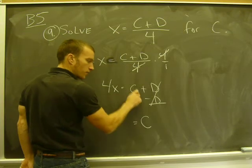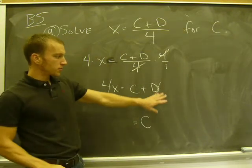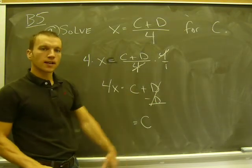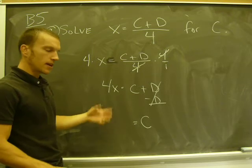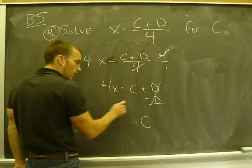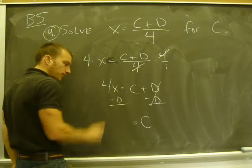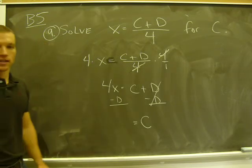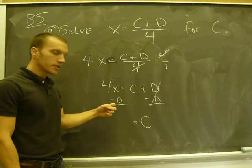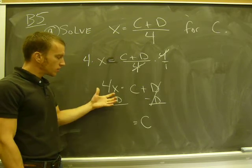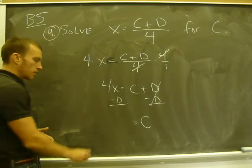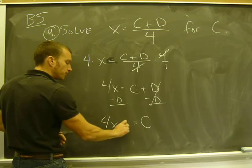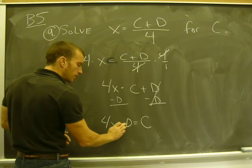Over here, I'm left with just C. But remember, if I subtract a value from the right side, I've got to subtract the same value from the left side. So if I subtract D, I've got to subtract D. But I can't subtract D from 4X. These aren't like terms. So I can't do the subtraction. All I have to do is write it just like that.